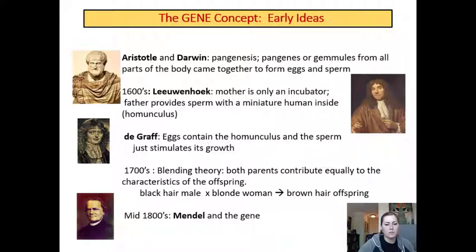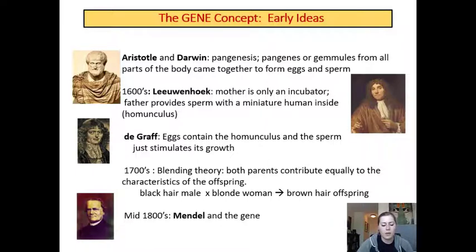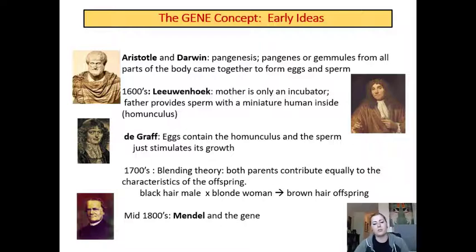By the 1700s, they were catching on and accepted the blending theory, which said that both parents contribute equally to the characteristics of the offspring — a blending of those characteristics. For example, a man with black hair and a woman with blonde hair would have a child with brown hair. As we know, this is not the case. In the 1800s, Mendel started doing experiments on pea plants and was able to discover the gene.